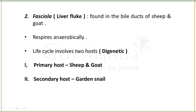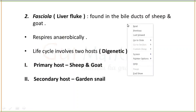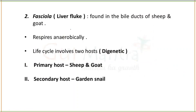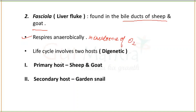Next, Fasciola is the liver fluke. It is found in the bile duct of sheep or goat. It respires anaerobically — meaning in the absence of oxygen. Its life cycle involves two host requirements, which is why it is called digenetic. The primary host is sheep or goat. The secondary host is garden snail.